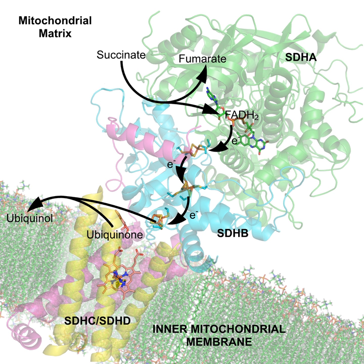Metal ions are common cofactors. The study of these cofactors falls under the area of bioinorganic chemistry. In nutrition, the list of essential trace elements reflects their role as cofactors. In humans this list commonly includes iron, magnesium, manganese, cobalt, copper, zinc, and molybdenum. Although chromium deficiency causes impaired glucose tolerance, no human enzyme that uses this metal as a cofactor has been identified. Iodine is also an essential trace element, but this element is used as part of the structure of thyroid hormones rather than as an enzyme cofactor.